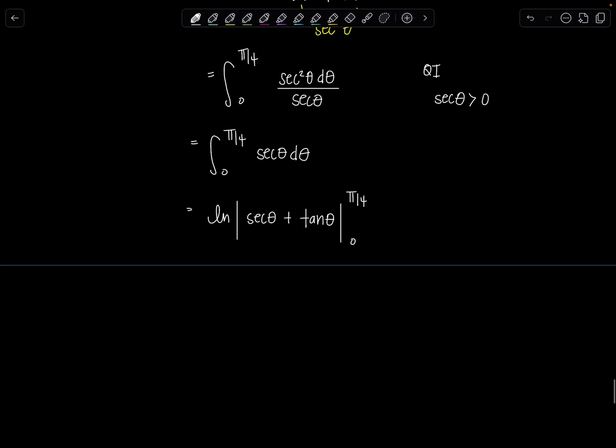So plugging in the upper limit we'll have natural log absolute value secant of pi over four is root two tangent of pi over four is one minus natural log absolute value secant of zero is one tangent of zero is zero. Beautiful. So this is just one. Natural log of one is zero.